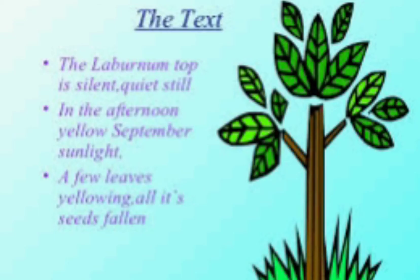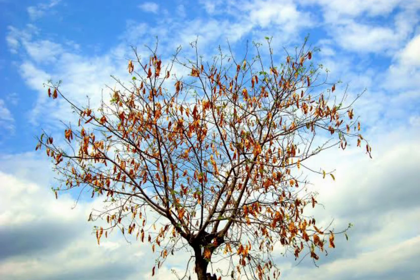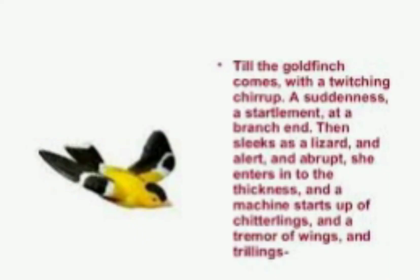The first stanza reads: 'The laburnum top is silent, quiet still, in the afternoon yellow September sunlight. A few leaves yellowing, all its seeds fallen.' Before the bird's arrival, the tree was standing still and quiet. This happened in the yellow September sunlight — that is, in the autumn season where there were no leaves. All the leaves had fallen and the tree was very dry and looked silent.